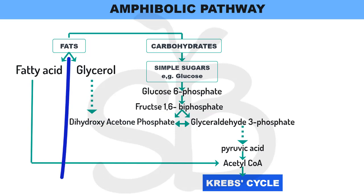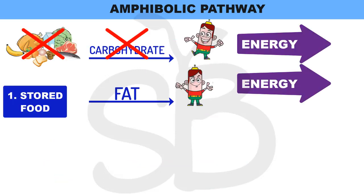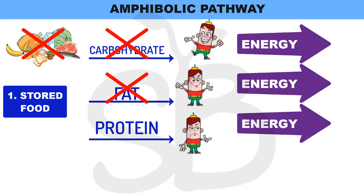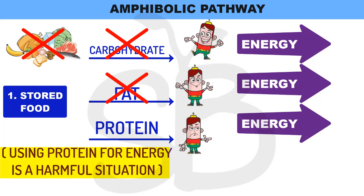So fatty acid → Acetyl Coenzyme A, and glycerol → Phosphoglyceraldehyde. The complex fat compound breaks down into simple compounds for energy production. When this condition continues — when carbohydrates are not available — the plant or animal depends next on protein.